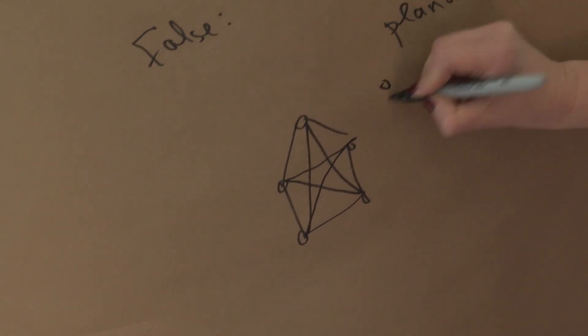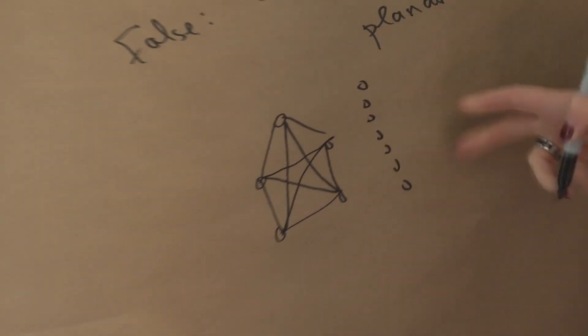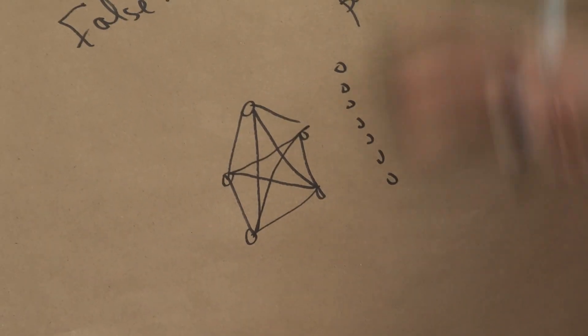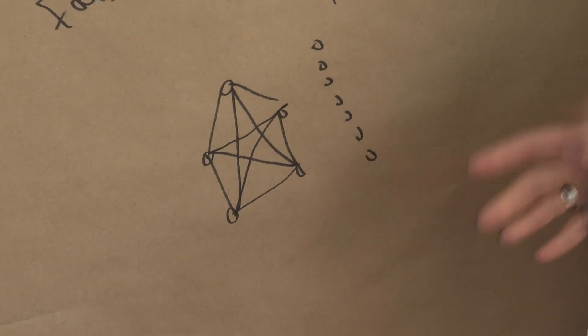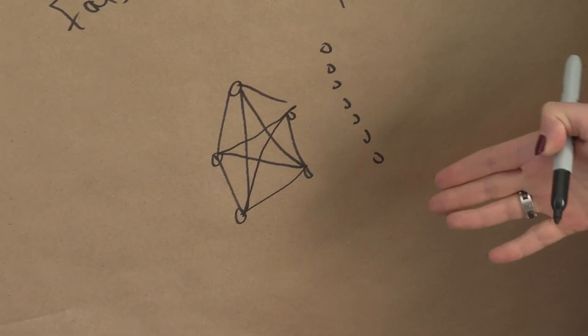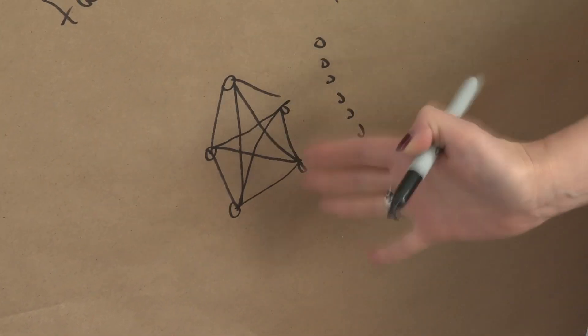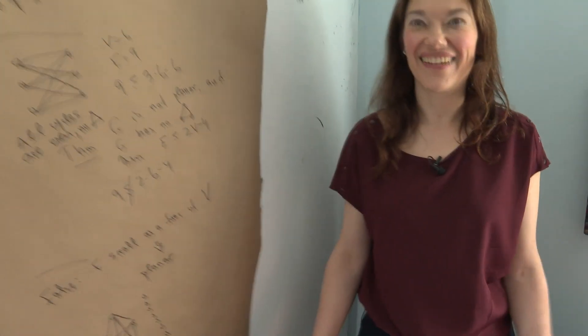So this has a million-billion gazillion vertices, and ten edges, and you can't embed it, because it's got this K5 that you'll have to embed. And you can say, well, this is just a cheat and disconnected graph, but make it connected.